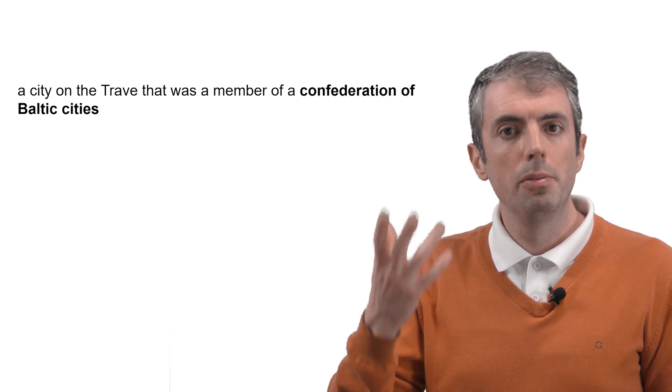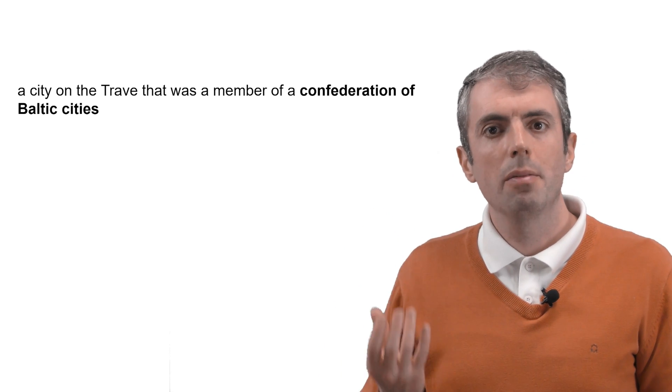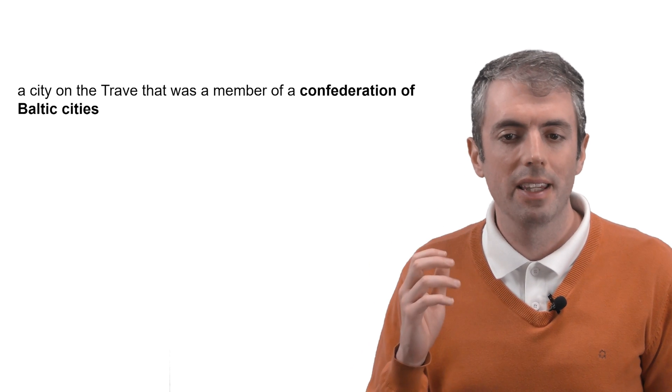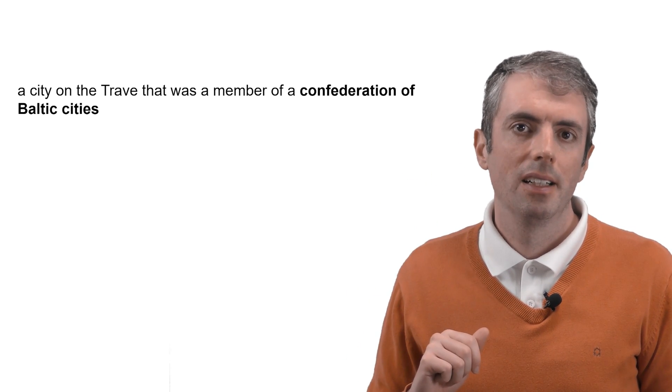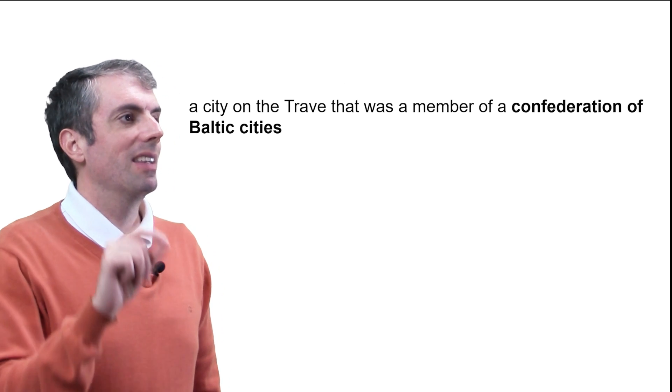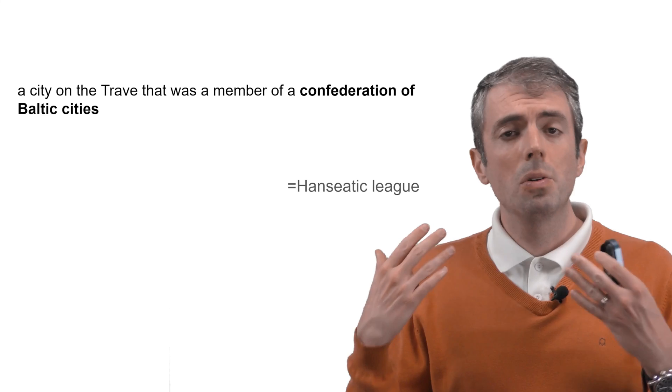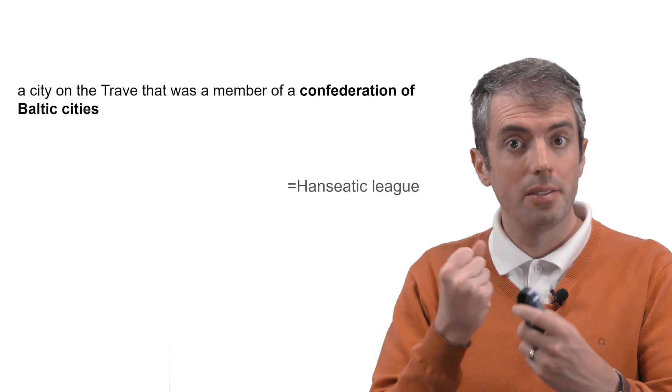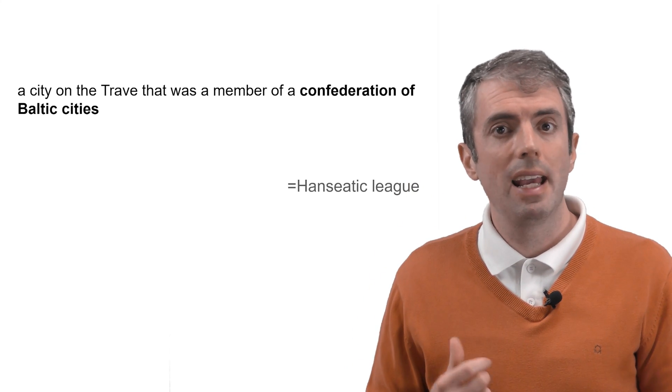If the question is about Lübeck, a city that was part of the Hanseatic League, the question writer might be tricky and say something like, a city on the Trava that was a member of the confederation of the Baltic cities, instead of mentioning the Hanseatic League by name. So, how could you have a system that learns to map these sorts of words to the things that you need to answer?